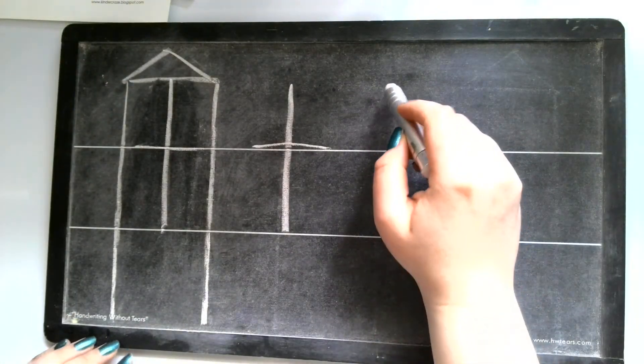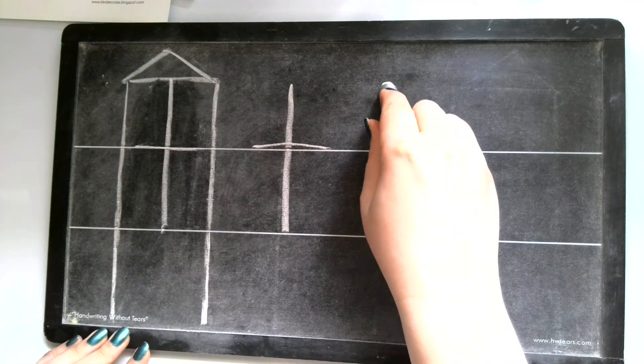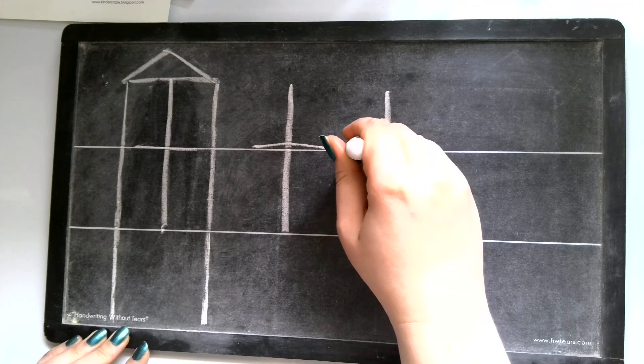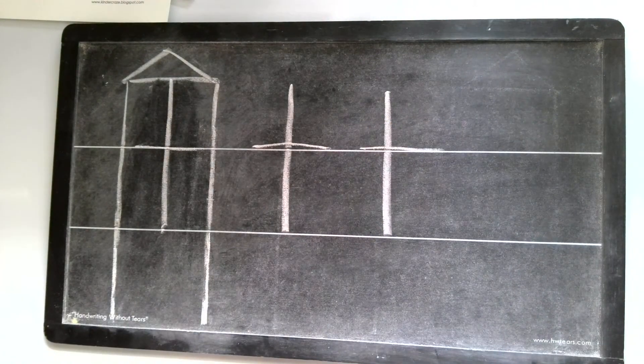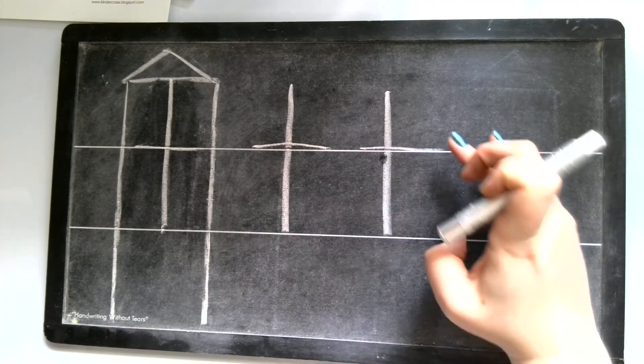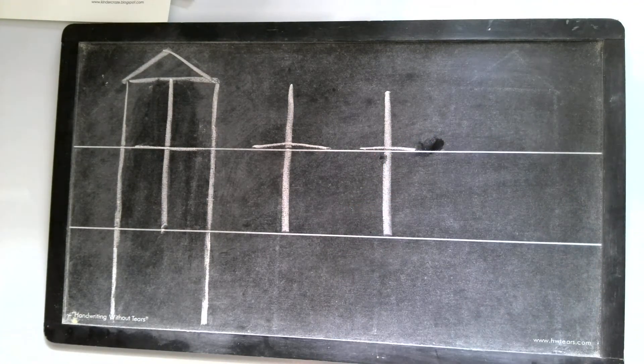Let's try that again. We're going to start at the top. We're going to come straight down. We jump up to the middle line and we go straight across. Now we want to make sure that our crossed line is not super long like this one. So I will just erase that so it's nice and short.